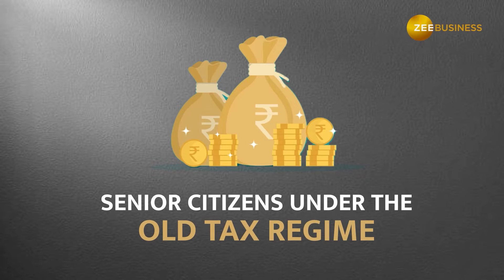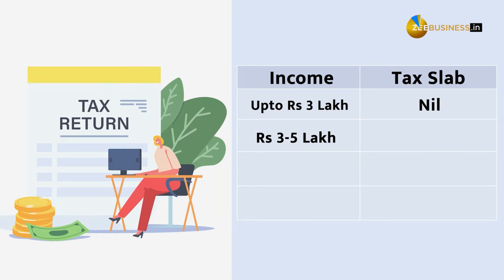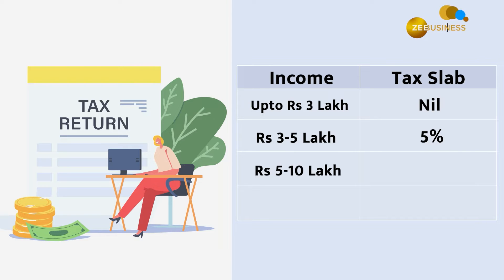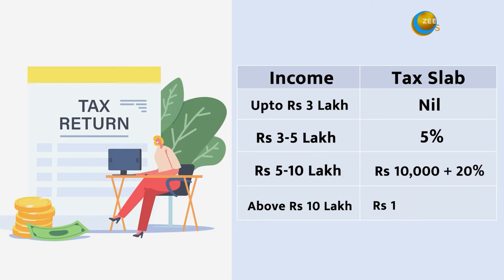Let's talk about income tax slabs for senior citizens under the old tax regime. Up to Rs 3 lakh income, they pay nil tax. Between Rs 3 lakh and Rs 5 lakh, they pay 5% tax on income over Rs 3 lakh. Between Rs 5 lakh and Rs 10 lakh, they pay Rs 10,000 plus 20% of income over Rs 5 lakh. For income above Rs 10 lakh, they pay Rs 1,10,000 plus 30% of income over Rs 10 lakh.